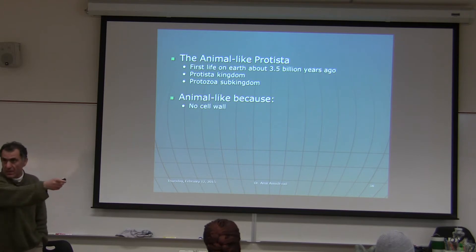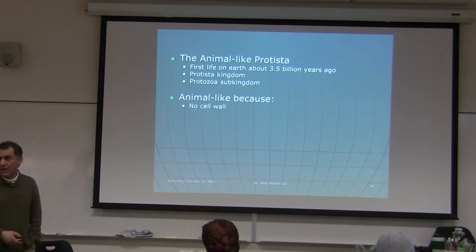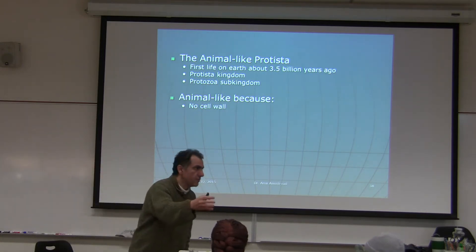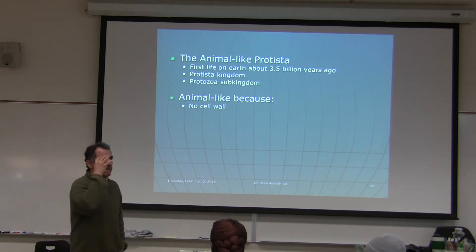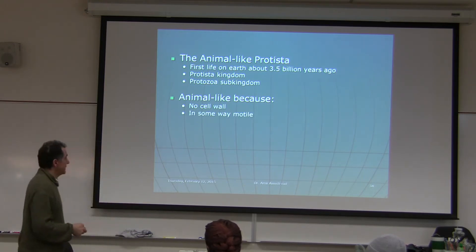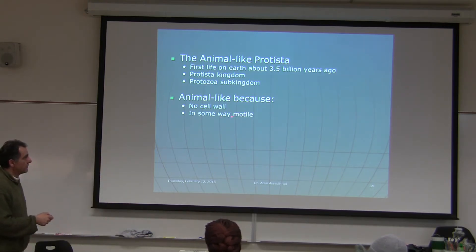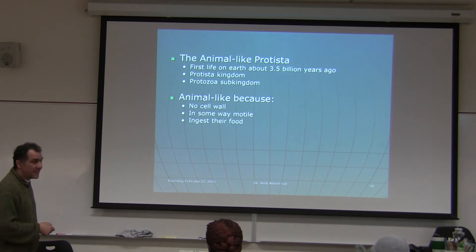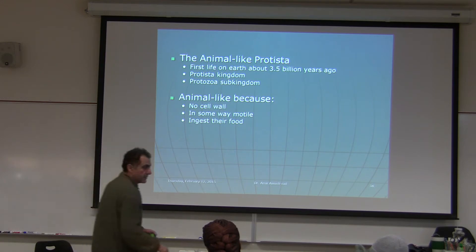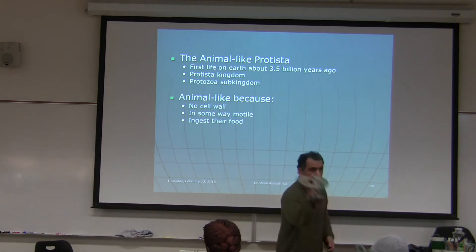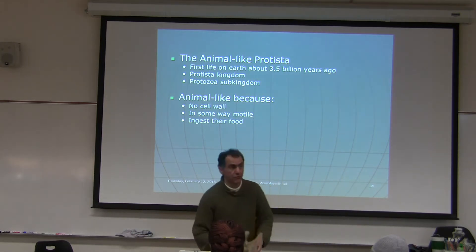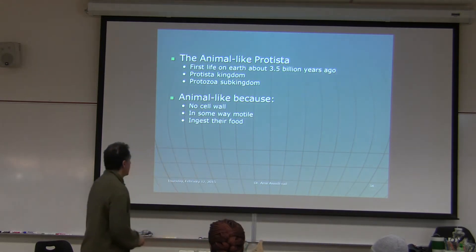Protista have animal-like characteristics. They do not have a cell wall — cell walls are made of cellulose, and protista do not have cellulose as far as we know. Some of them are motile, and they ingest their food either by an oral groove or by phagocytosis. That's why they are considered animal-like.